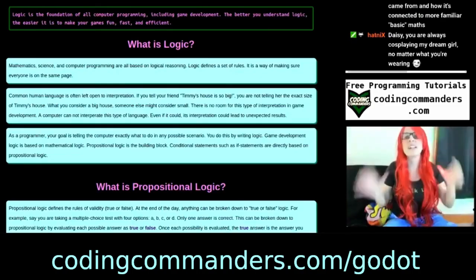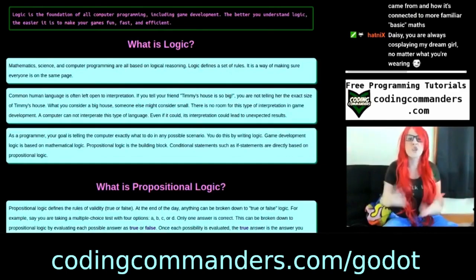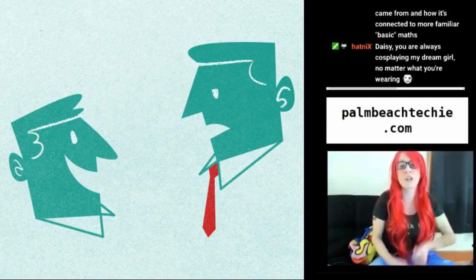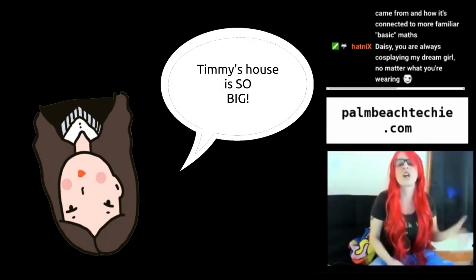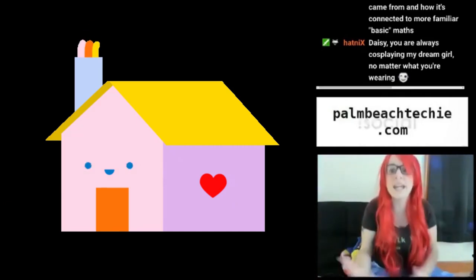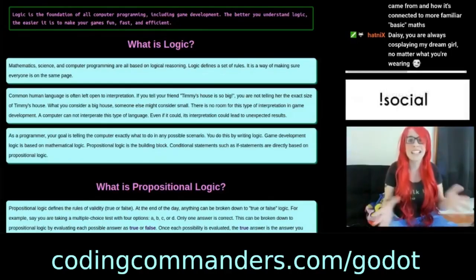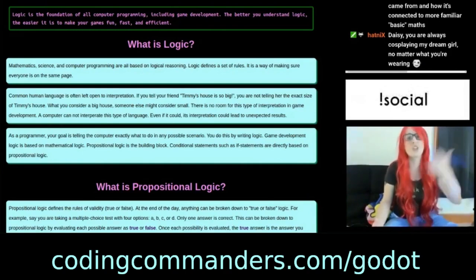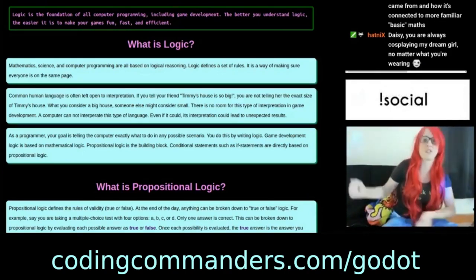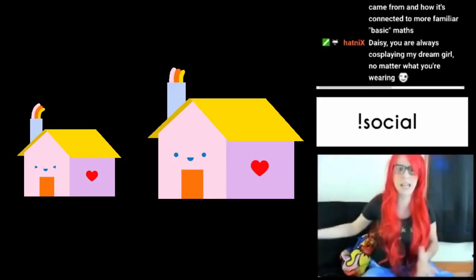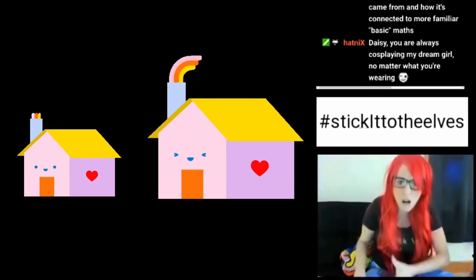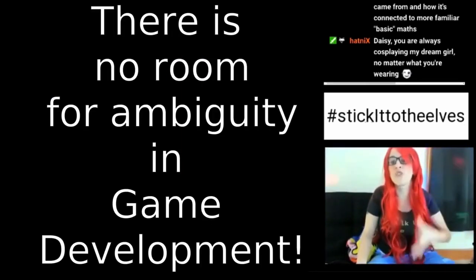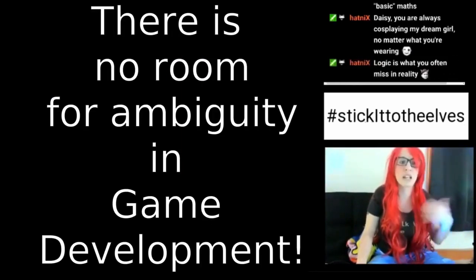Logic defines a set of rules. It's a way of making sure everybody's on the same page. Common human language is often left open for interpretation. If you tell your friend Tippi's house is so big, you're not actually telling her anything about the size of the house. What you consider a big house might be different than what your friend considers a big house. What you think is a big house maybe she thinks is small. There's no room for this type of interpretation in game development.